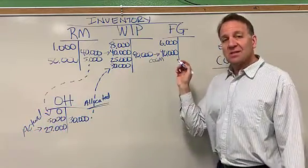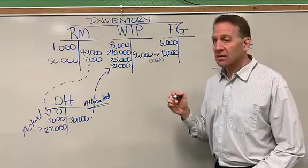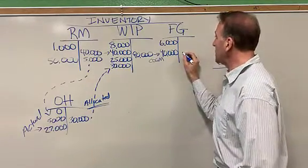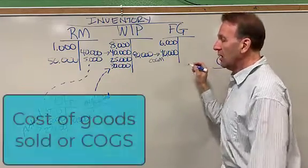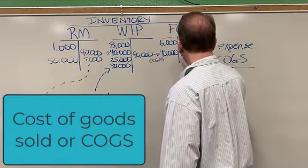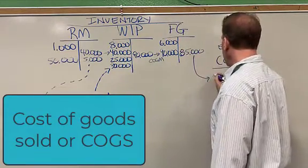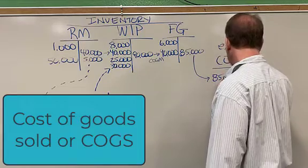That's coming out of work in process going into finished goods. Now finished goods is still an inventory, but when we sell the items, then we need to move that cost out of finished goods into cost of goods sold. Let's assume that $85,000 worth of items were actually sold.